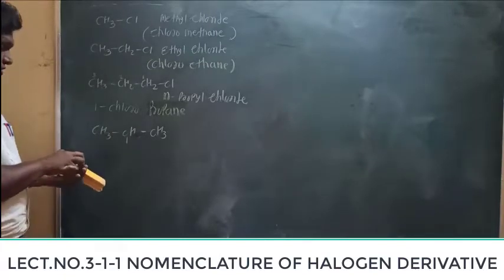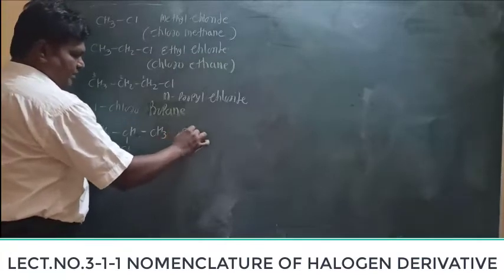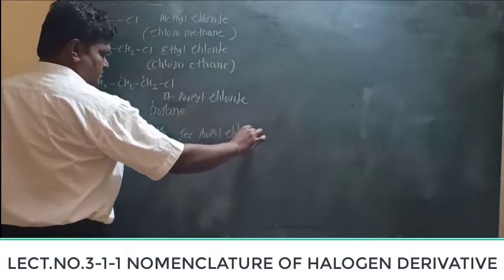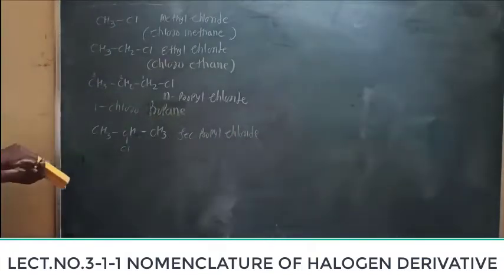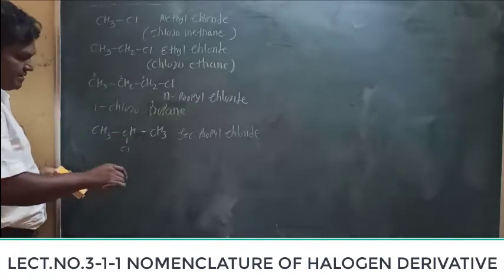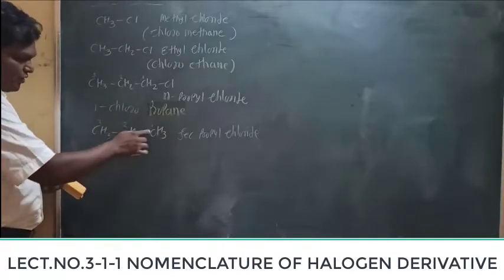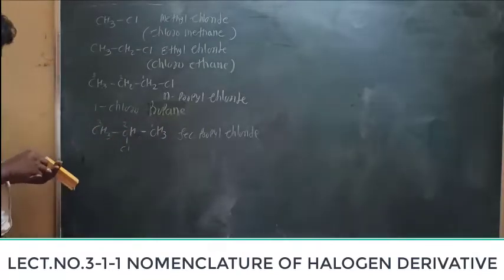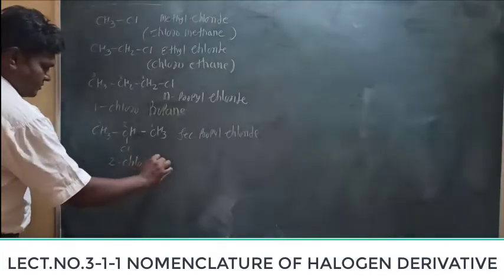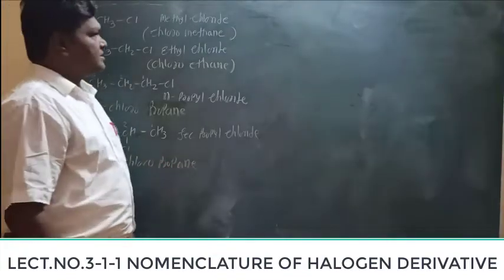The next compound — we already know the common name is secondary propyl chloride. For the IUPAC name, you number the chain: one, two, three — or one, two, three. The chlorine atom gets the lowest possible number. You will find it is propane, and the name is 2-chloropropane. That is the IUPAC name of this compound.